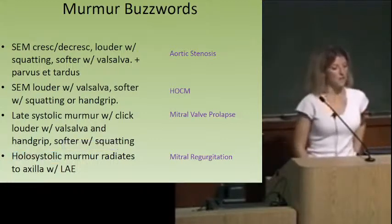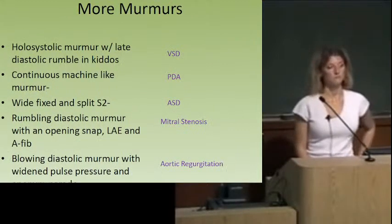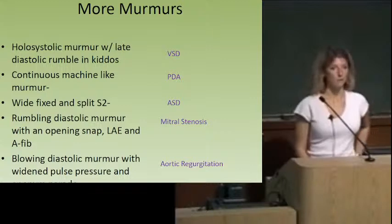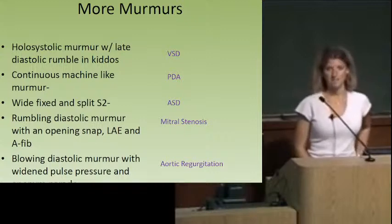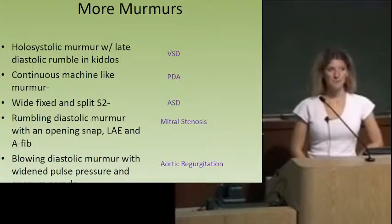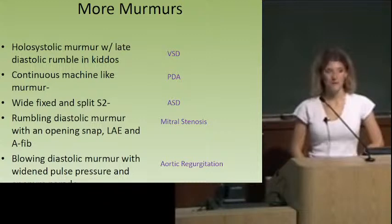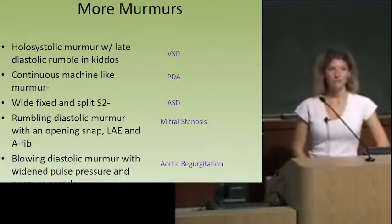Another holosystolic murmur, but in kiddos: the most common congenital heart defect is a VSD. A continuous machine-like murmur — remember that from Step 1 — is a PDA. Wide, fixed, and split S2 is an ASD.